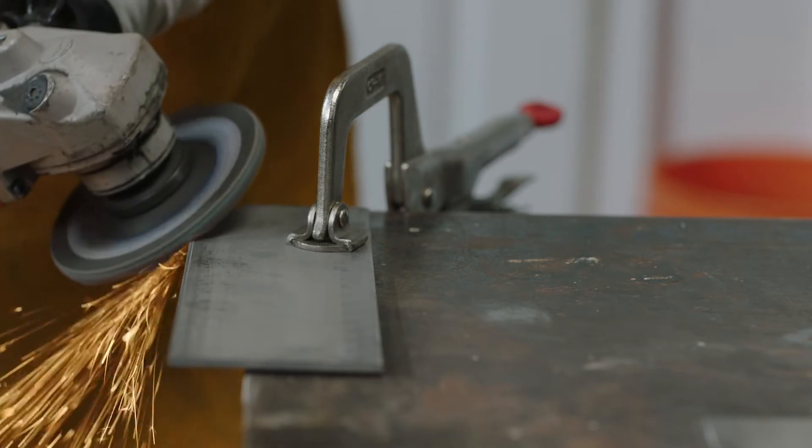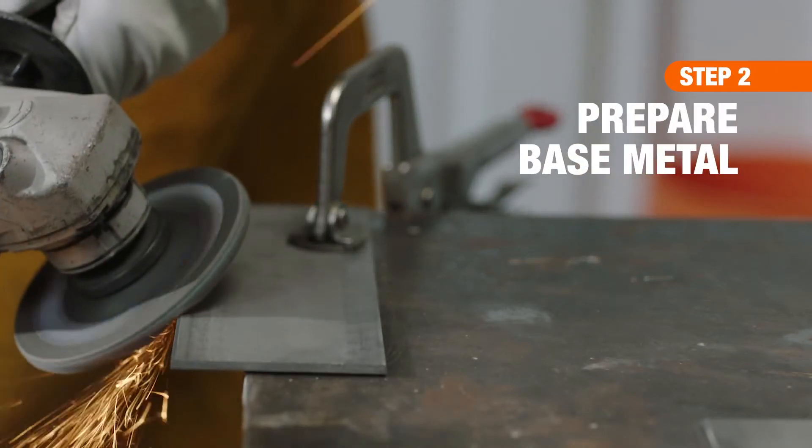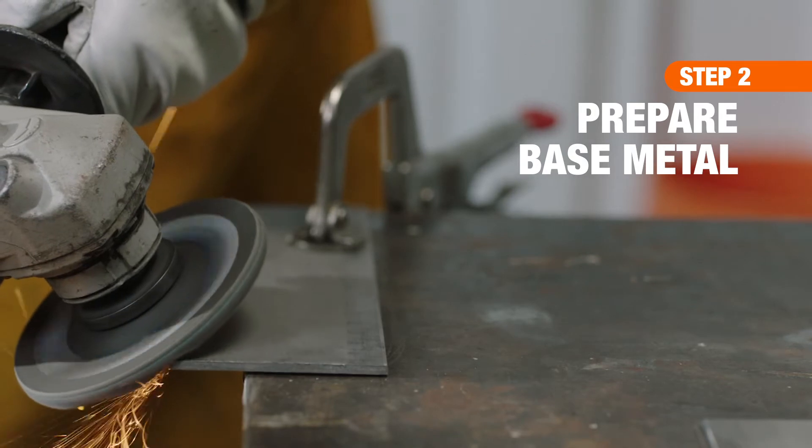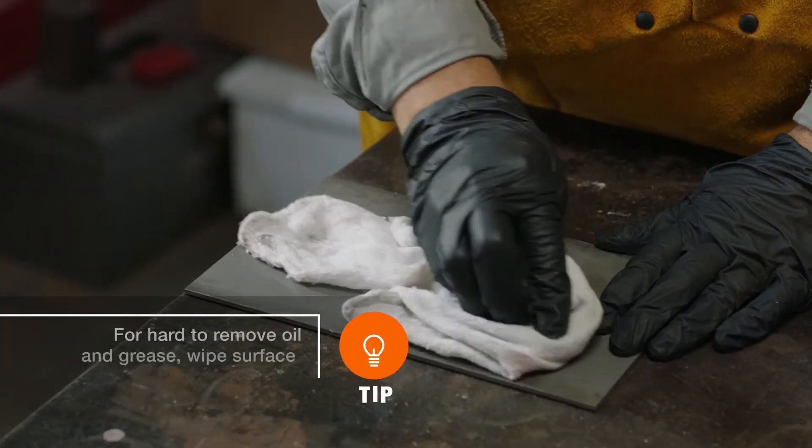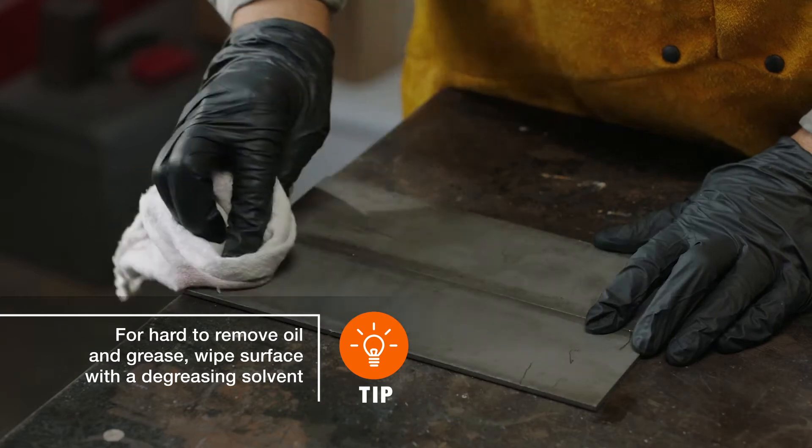Next, use a grinder with a wire brush attachment to clean the surface of the base metal you are welding. A clean surface is necessary to avoid contaminating the weld pool, so remove any dirt, grime or grease from the piece.